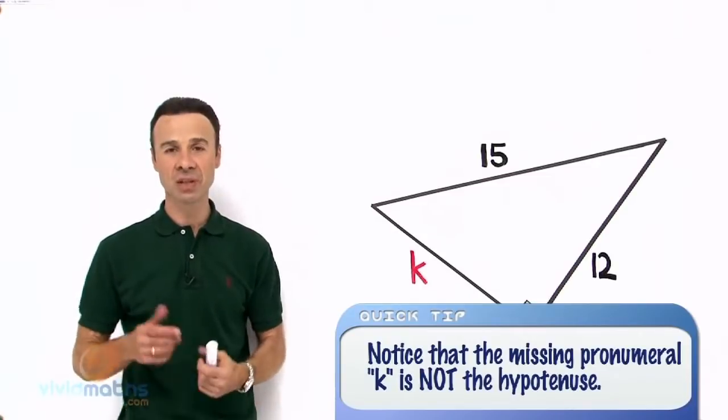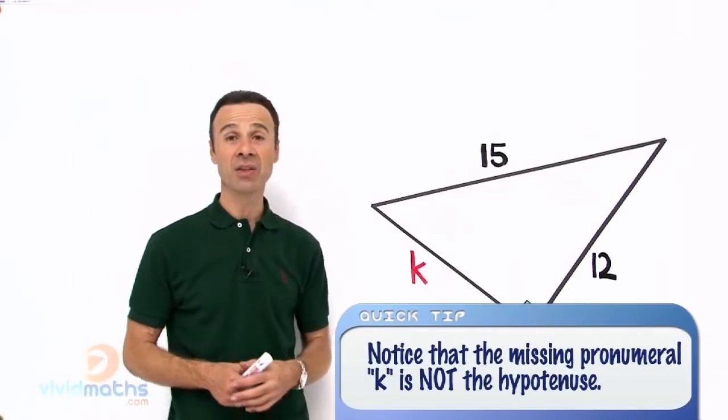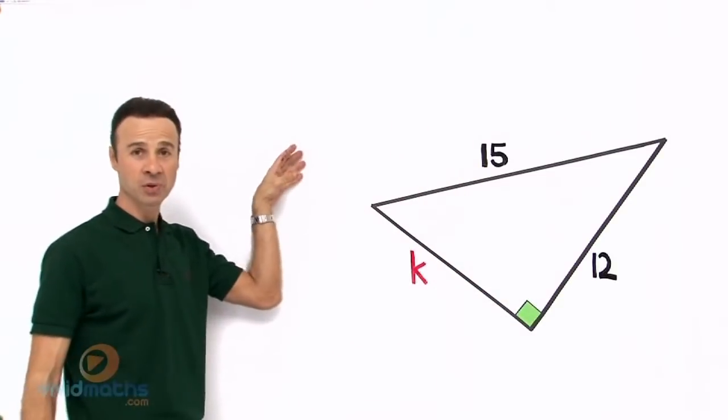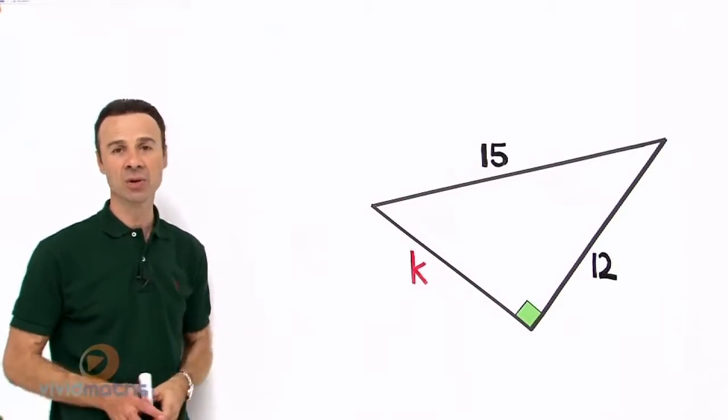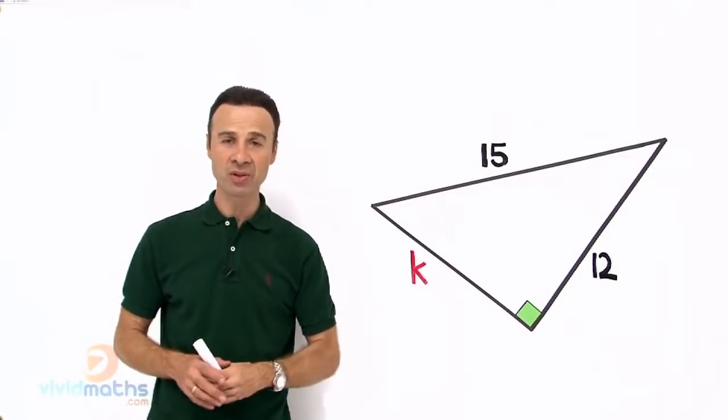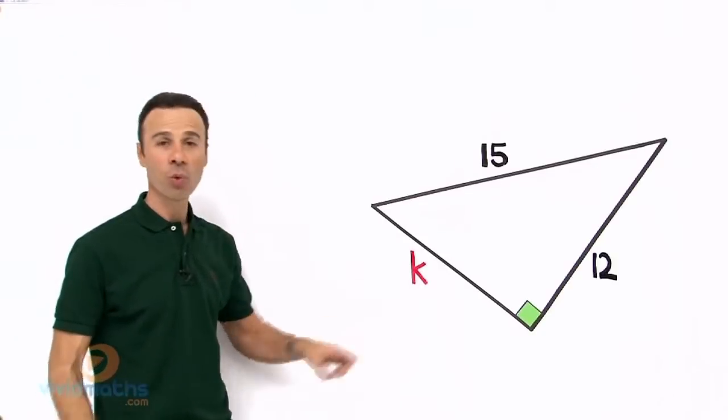So what are the three steps? Step 1: write down the Pythagorean equation. Step 2: substitute the values we have into the equation. And finally, step 3: take square roots of both sides to find what K is.